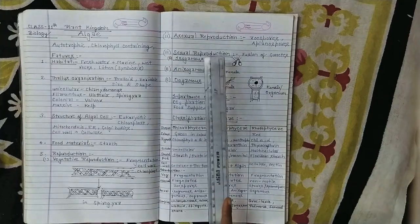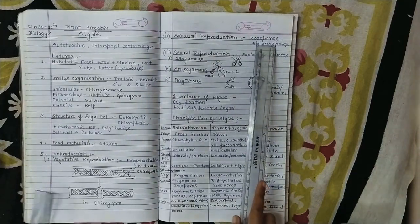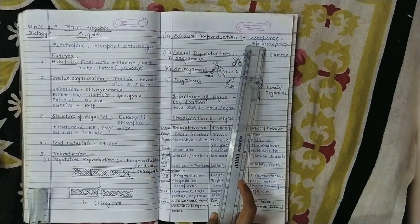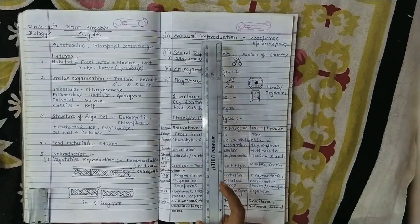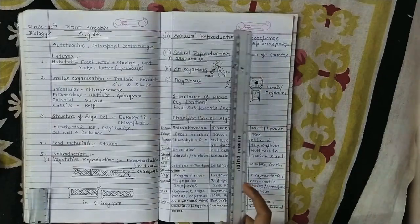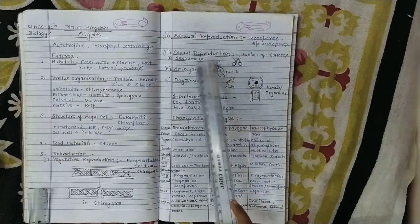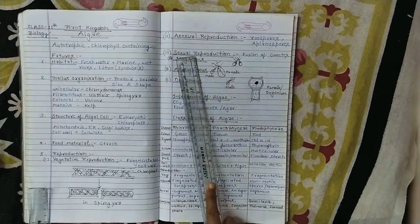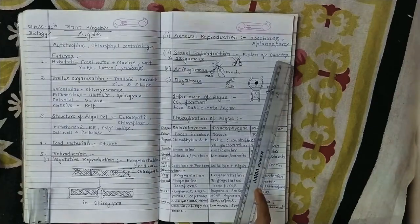Asexual reproduction, here we will study zoospores. Zoospores are motile spores and aplanospores are non-motile spores. Next is sexual reproduction, sexual reproduction means fusion of gametes, male gametes and female gametes.